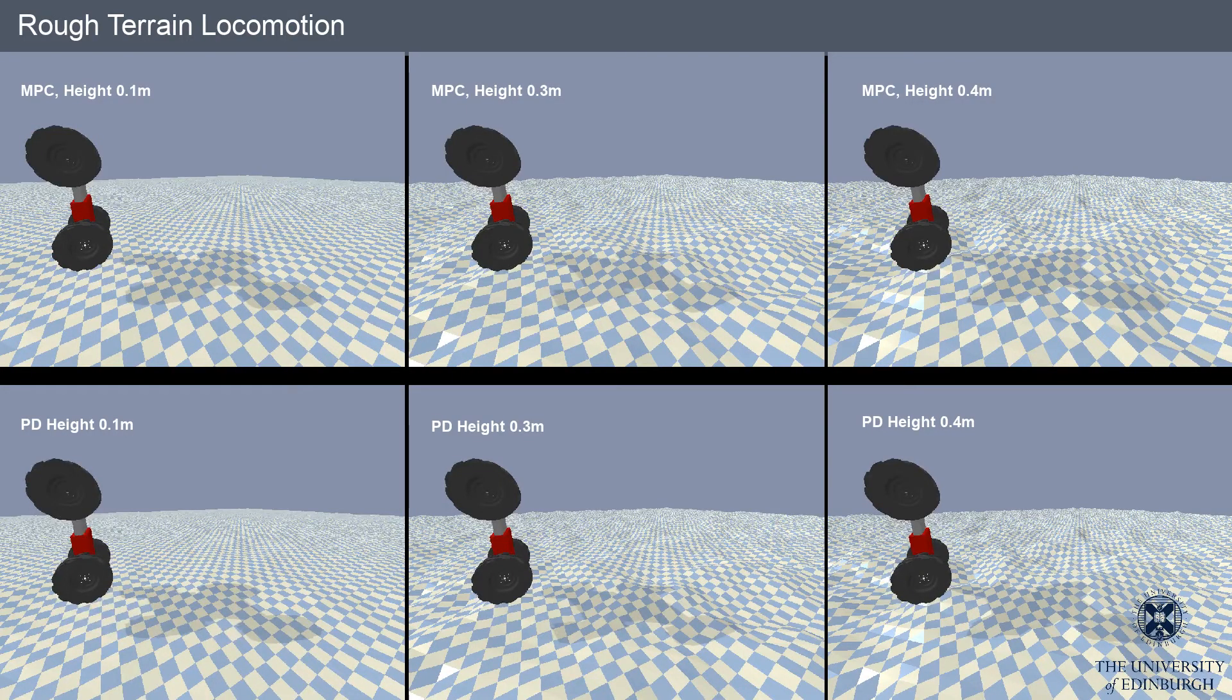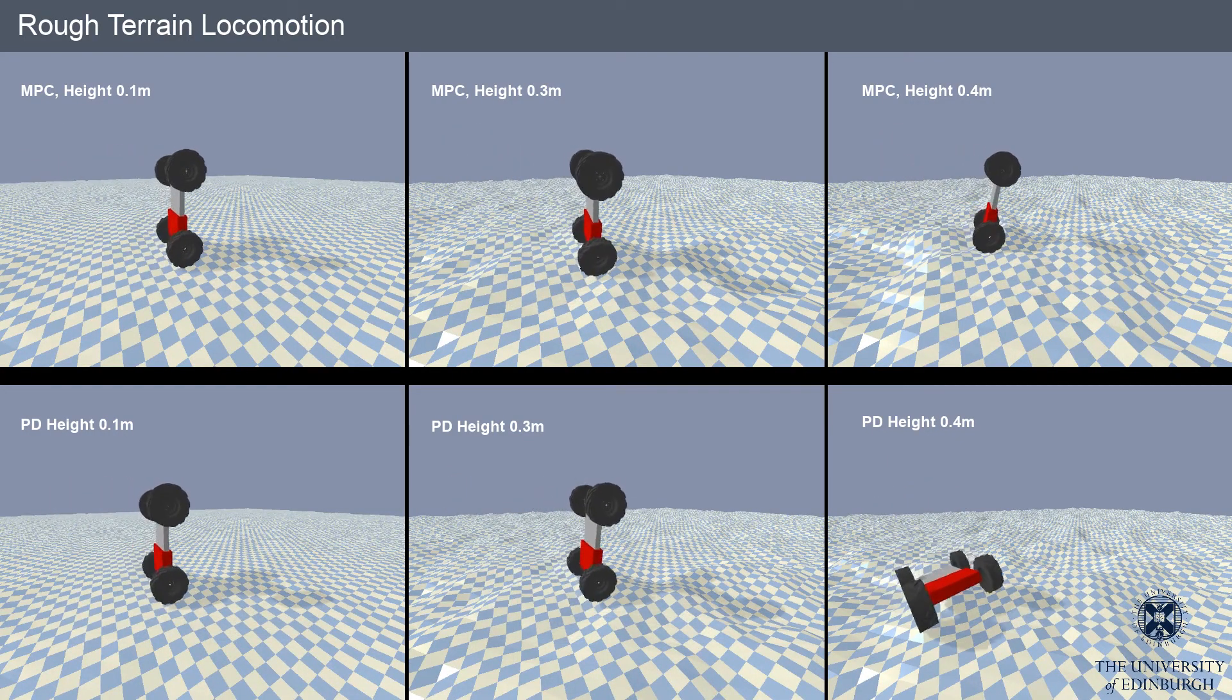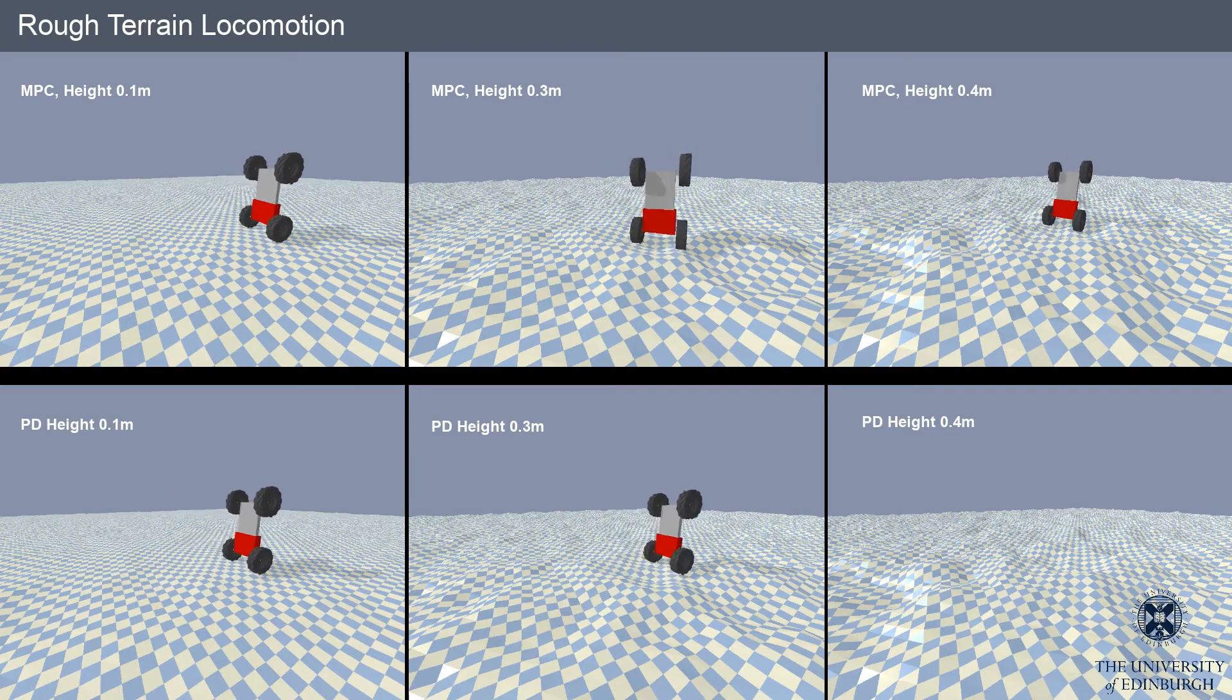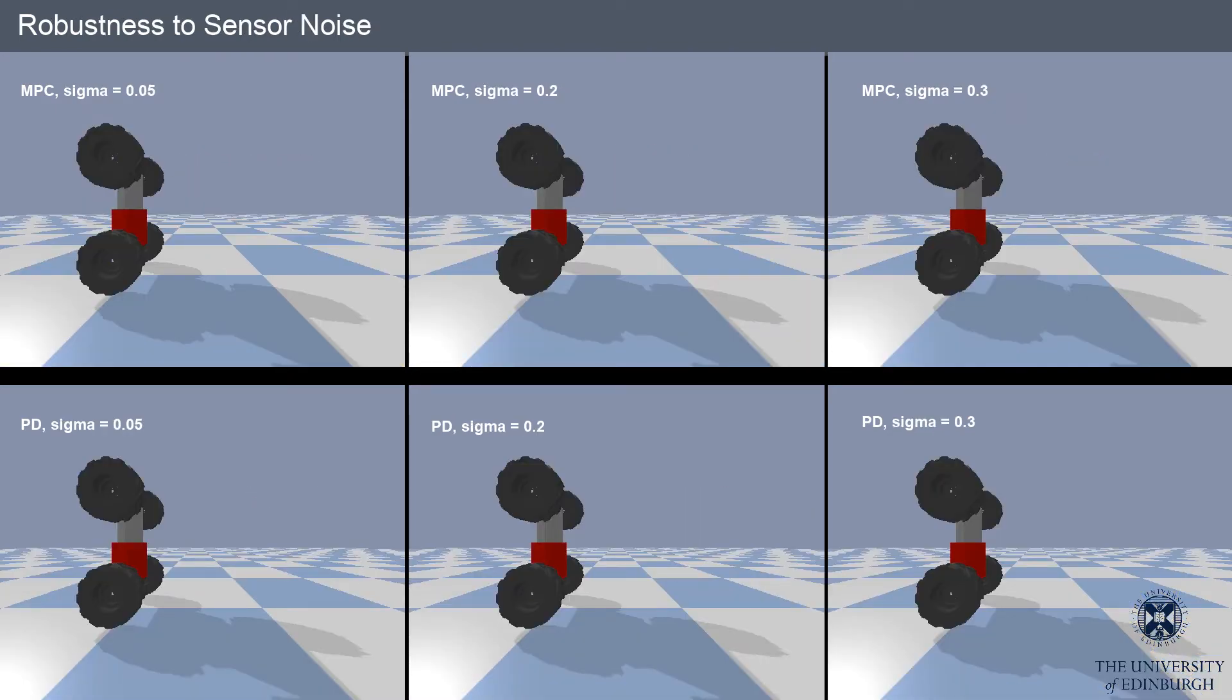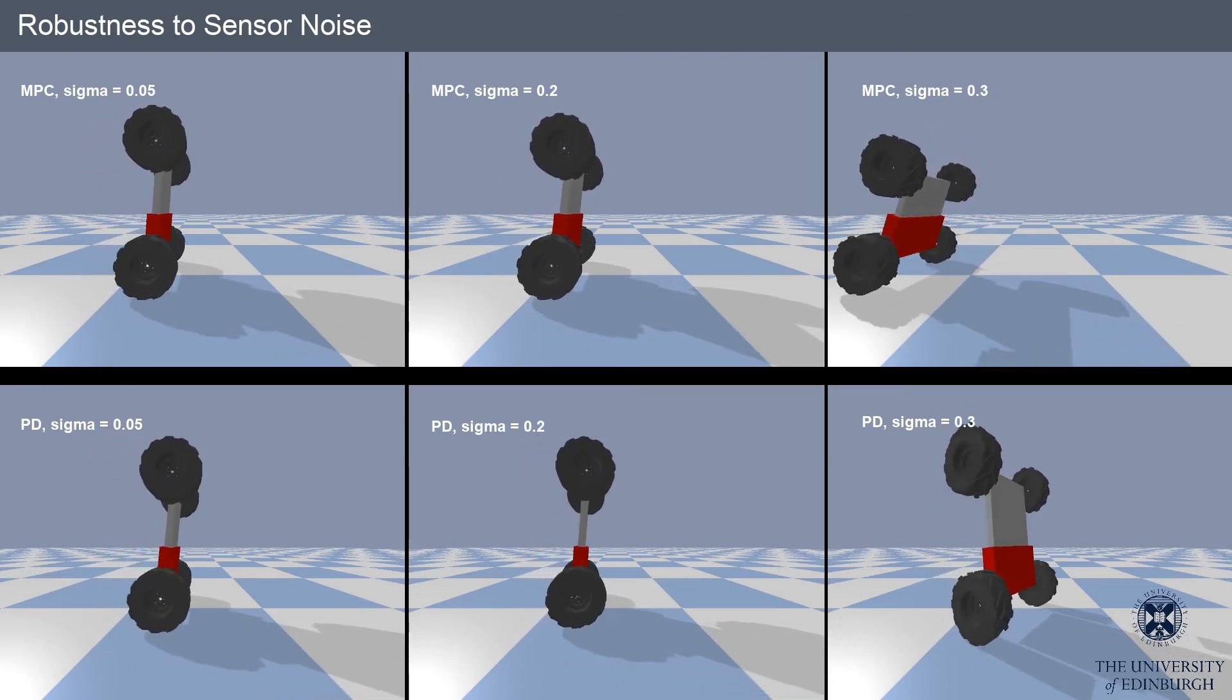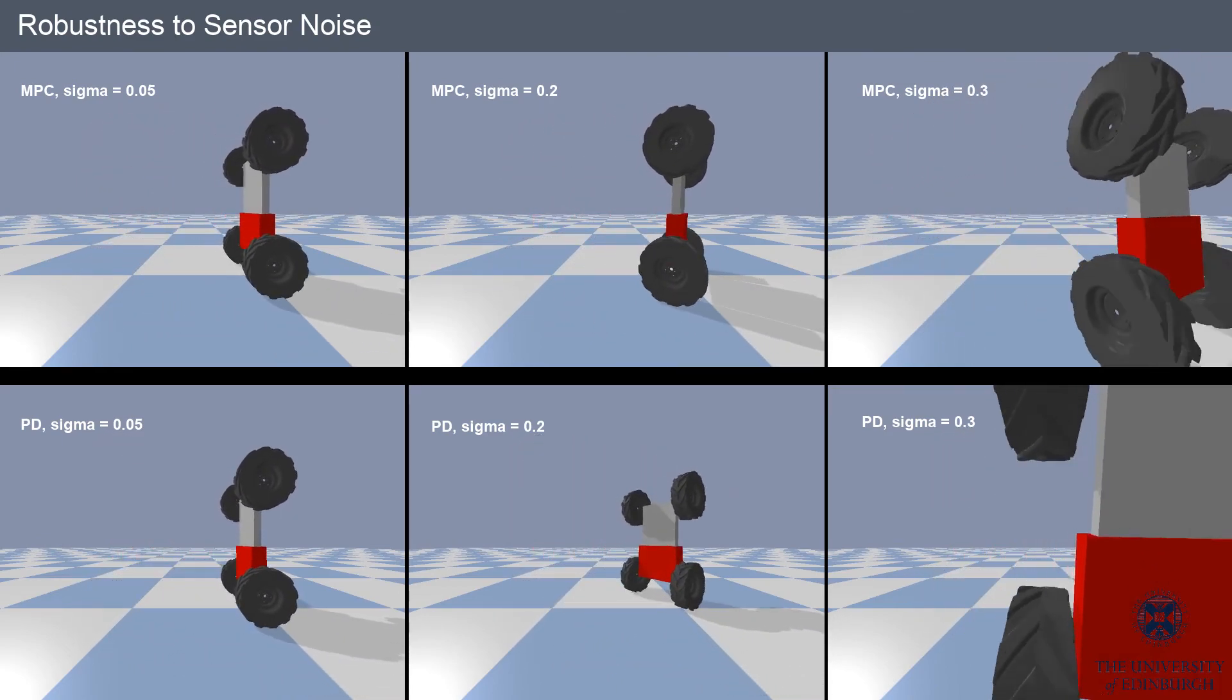We evaluate the robustness of our approach by comparing it to a proportional derivative controller on uneven terrain with varying heights. Finally, we consider the effects of sensor noise, again comparing the MPC controller with the PD controller.